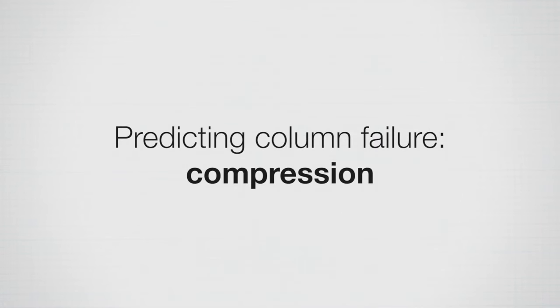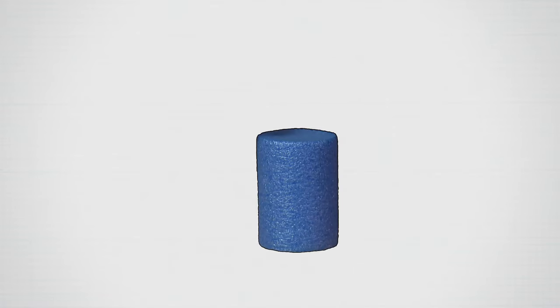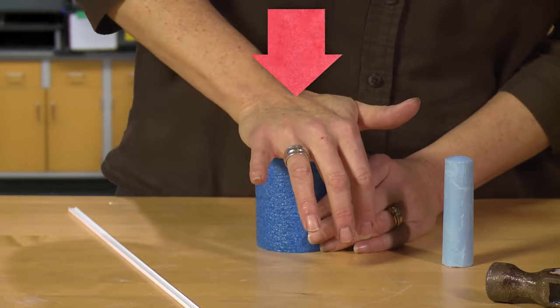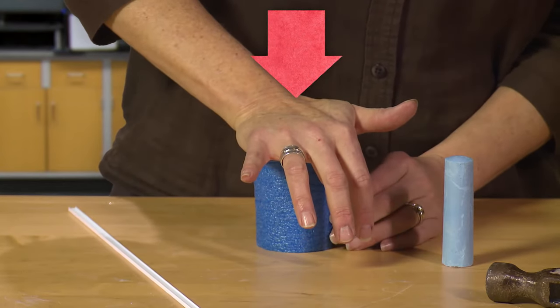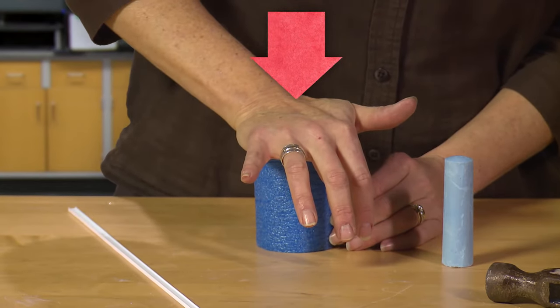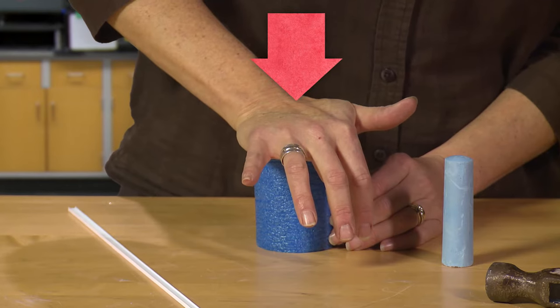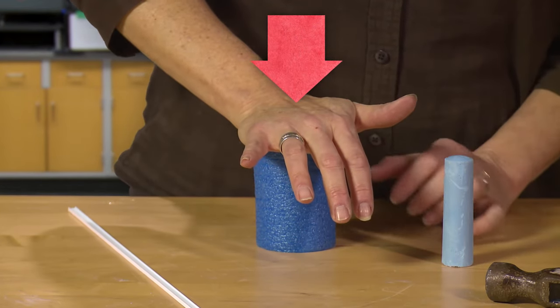So how do we predict failure? I'm going to start with compression, a compression failure, and I'm going to use a small blue foam beam. When I push on it, if I push hard enough I can shorten the column. That downward force when I push on it, I call that a compressive force, and I often model that with a downward arrow.